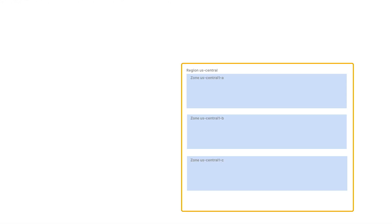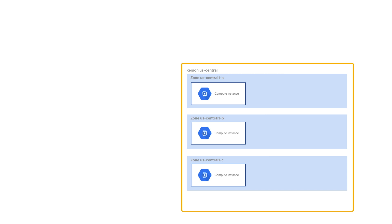Using this instance template, configure a regional managed instance group. This is to ensure resilience. If the whole zone was to go down, the instance will still be available in another region to keep the application running.